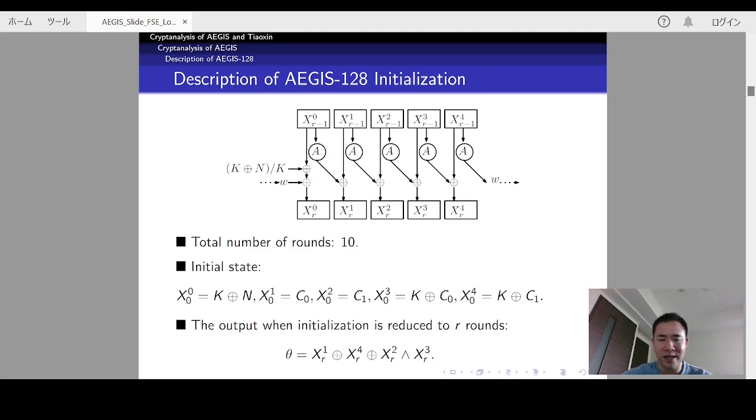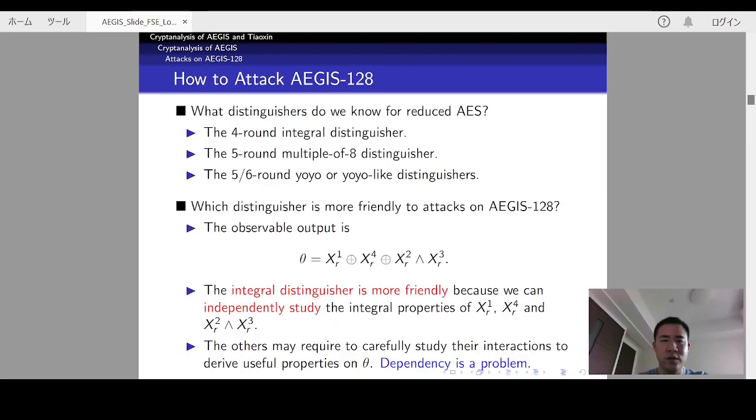Supposing the target is R initialization rounds, what we can know is only theta, where theta equals XR1 plus XR4 plus XR2 and XR3. So, we cannot know the specific value of each block. What we can know is only theta which is computed according to some combinations of the blocks.